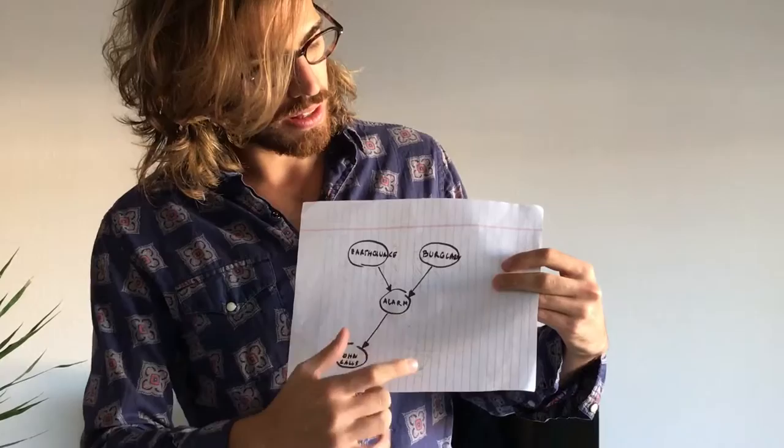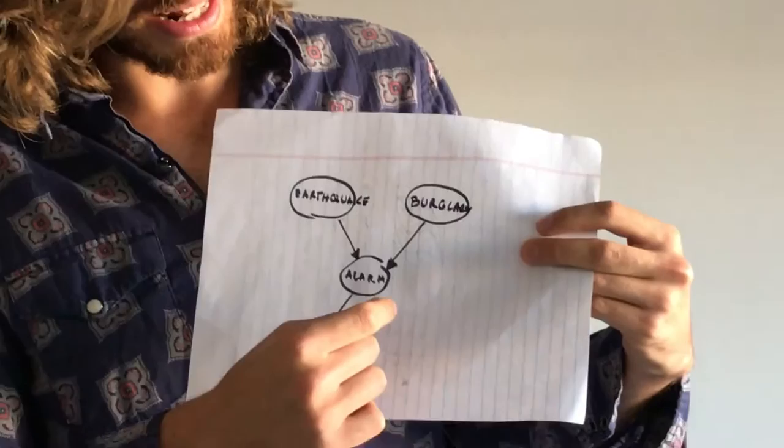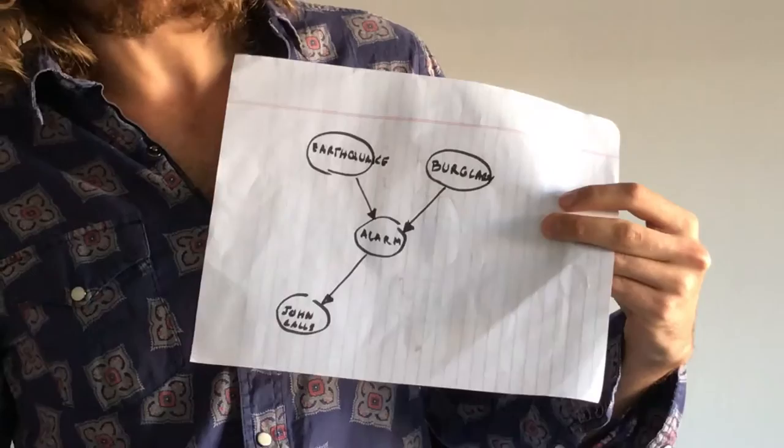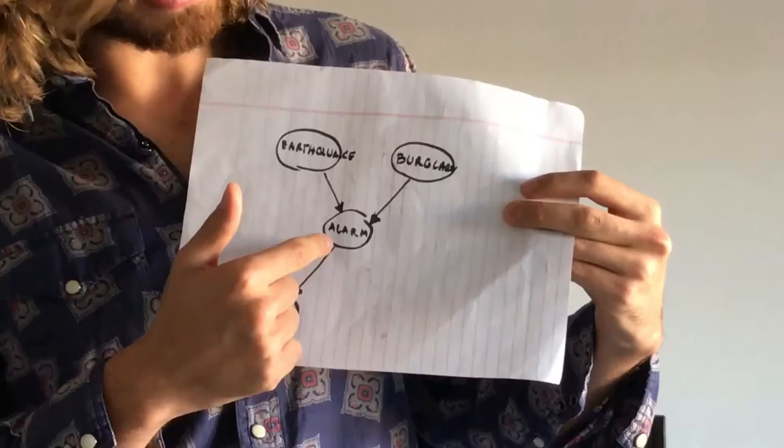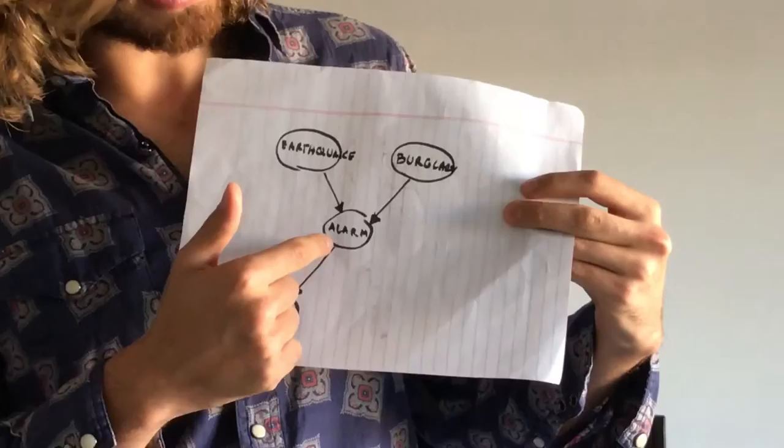Belief networks offer several advantages. They are clear and concise in the way they represent the relationships between random variables, and they also offer a clear distinction between qualitative and quantitative data. For example, in this belief network we can clearly see the alarm depends on these two other random variables, earthquake and burglary, and the random variable that tells us whether our neighbor John will call or not is only conditionally dependent on the alarm variable.